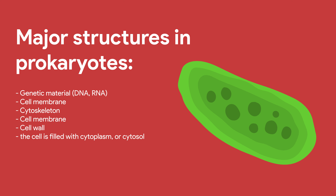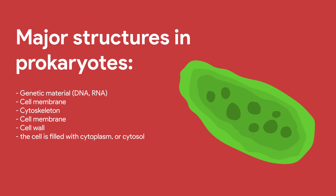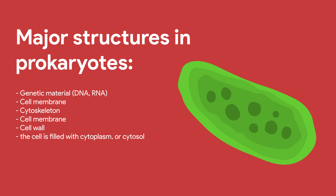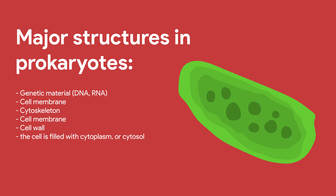The inside of a prokaryotic cell contains cytoplasm. Most prokaryotes have a lot of ribosomes, which are necessary for making proteins. All living cells must be able to make proteins. The inside of a cell is surrounded by a cell membrane. Prokaryotic cells have a cytoskeleton — a network of filaments that gives a cell its structure. The cytoskeleton in a prokaryotic cell is less developed than in a eukaryotic cell. It's necessary for cellular reproduction and movement, and affects the cell's shape.